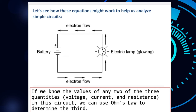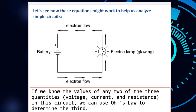In your module, you encounter a drawing that shows a simple circuit with a battery and an electric lamp that is glowing, showing electrons flowing through it. If we know the values of any two of the three quantities — voltage, current, and resistance — we can use Ohm's Law to determine the third.